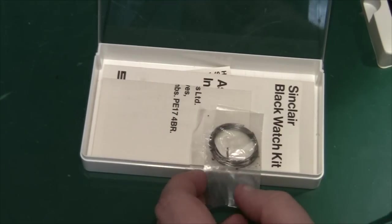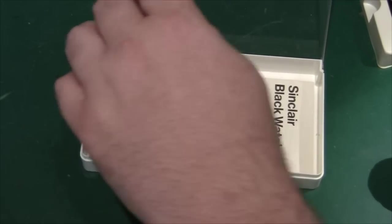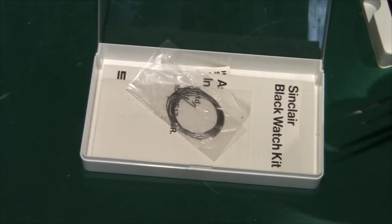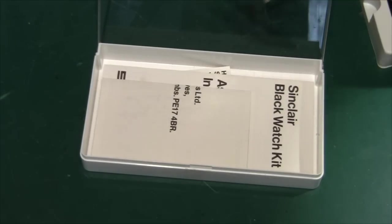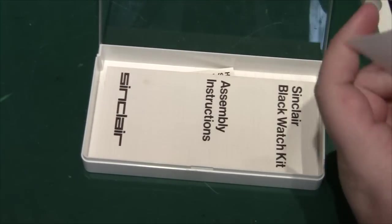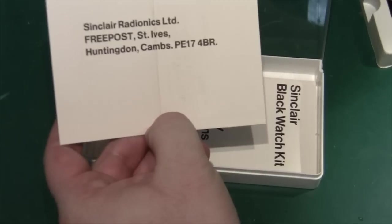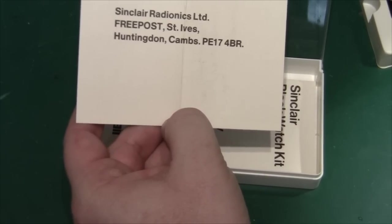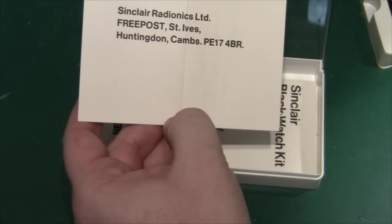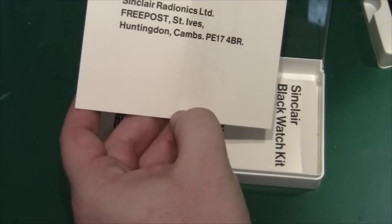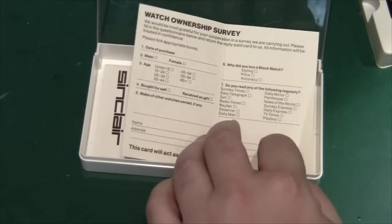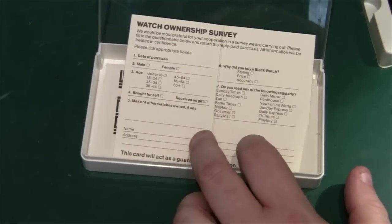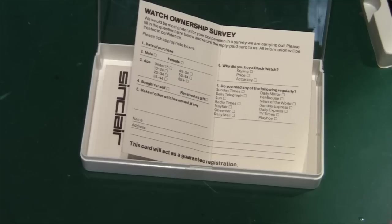Then there's some solder. And this is very thick solder, considering what you have to solder. But okay, not too thick, but a bit thick. There we have a warranty card. Sinclair Radionics was in Huntington. And there's a survey on the back. They want to know who you are and a little bit about yourself, what kind of newspapers you were reading and whatever.